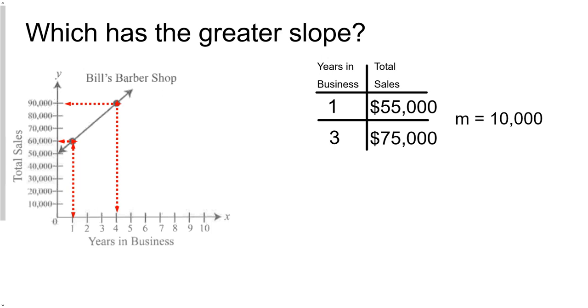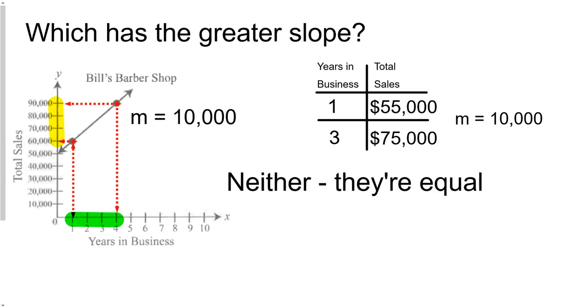And once you do that, then you can see, hey, you went up from the first point to the second point, $30,000. You went from 60,000 to 90,000. So we went up 30,000. And then we went over to the right from 1 to 4. So that's a difference to the right of going 3. And so 30,000 over 3 is 10,000. So neither of these has a greater slope. They're actually equal.